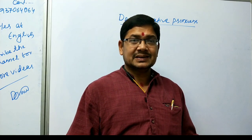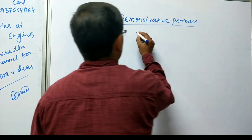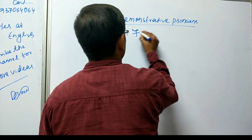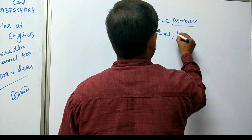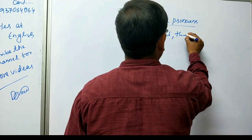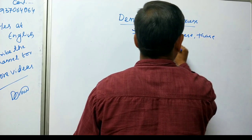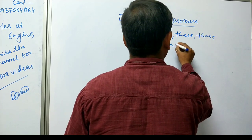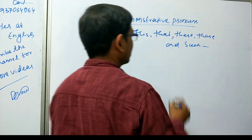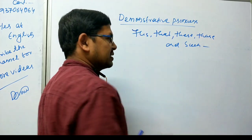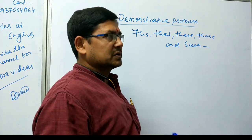So, the demonstrative pronouns are: this, that, these, those, and such. These are your demonstrative pronouns — this, that, these, those, and such.